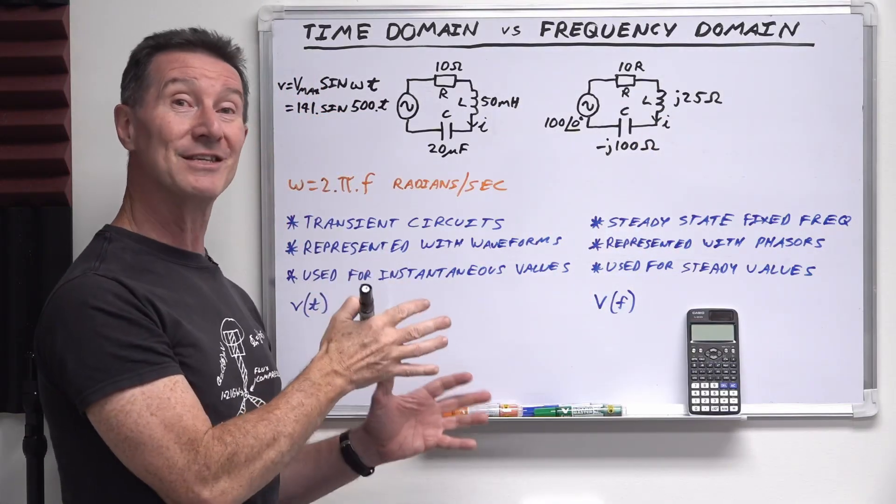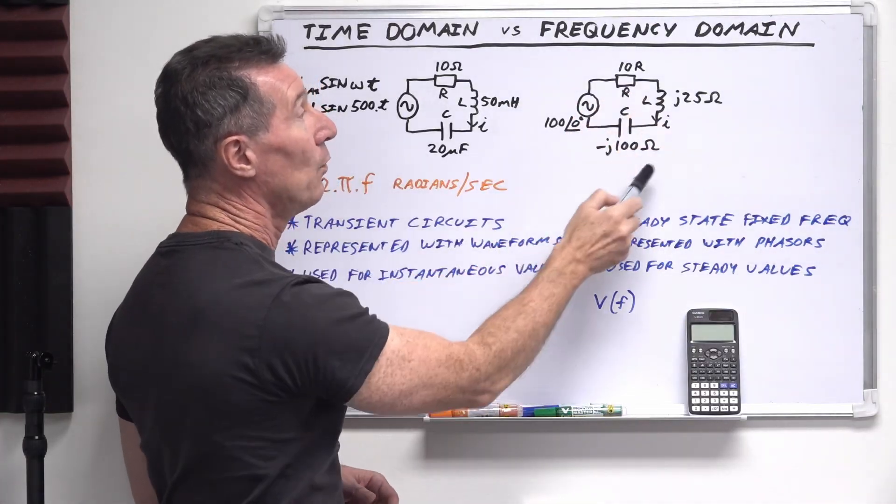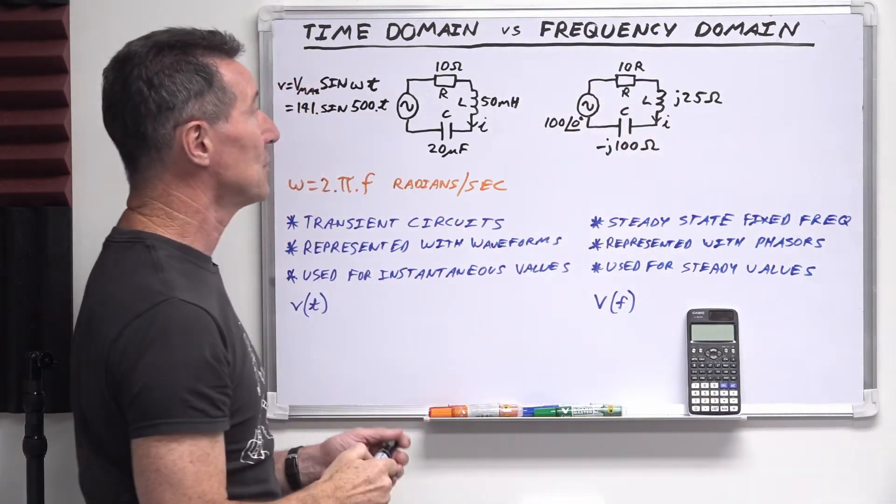And likewise, the inductive reactants over here is positive J 25 ohms. Remember from the previous video, reactants is in ohms. So, yeah, basically, we're just dealing with different ohm values in the circuit.